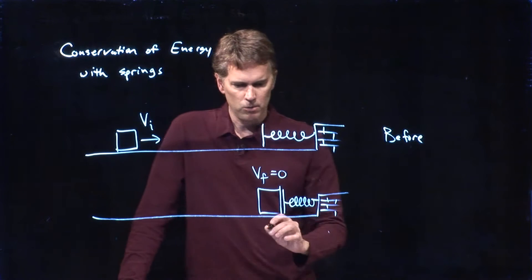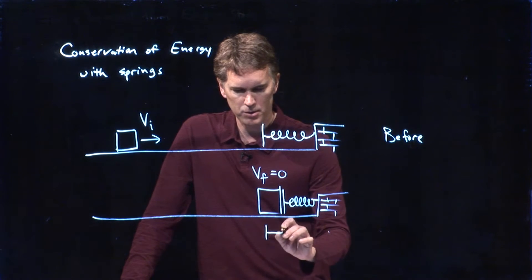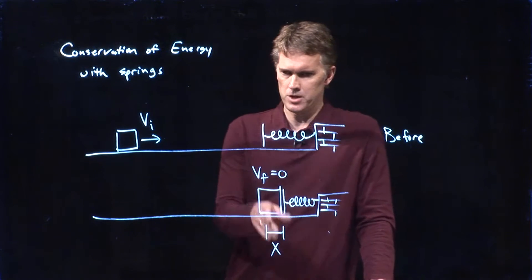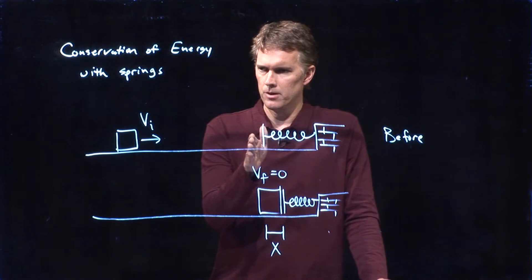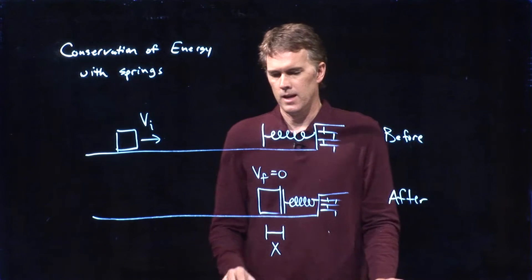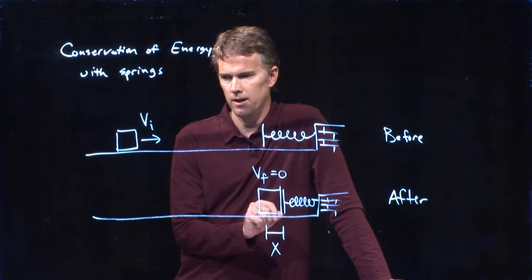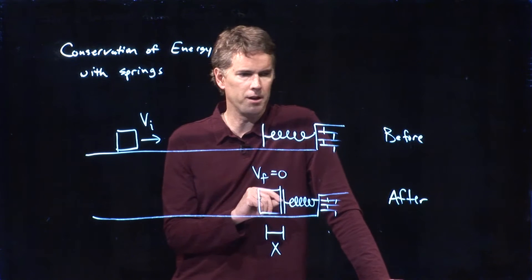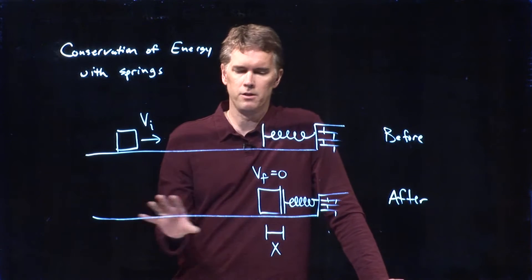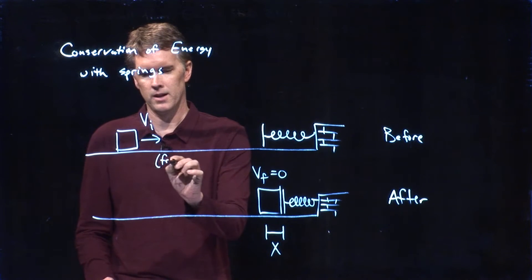Now, one thing that we need to know is how far did that spring compress? It compressed a distance x. x is always measured from equilibrium to maximum compression. And so that is the distance x that we're worried about. And it looks like we have all the other terms that we need. This is the before picture. This is the after picture. And we're going to say that this surface is frictionless.